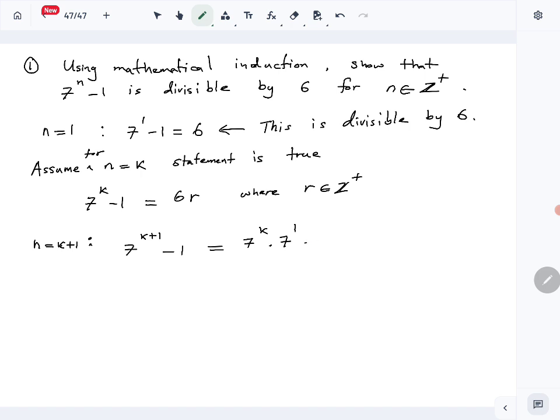For 7^k we can replace 7^k by what, using this? Using this, you can replace 7^k by 1 + 6r.